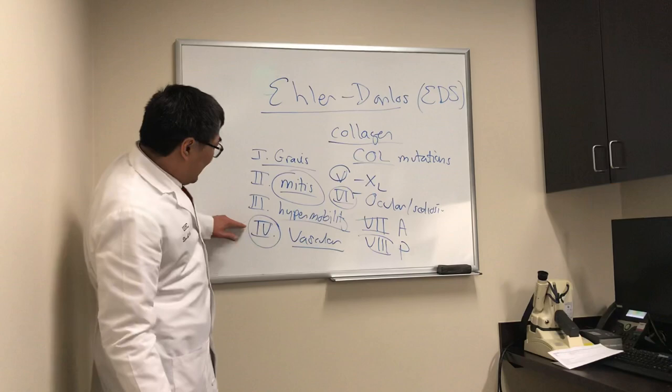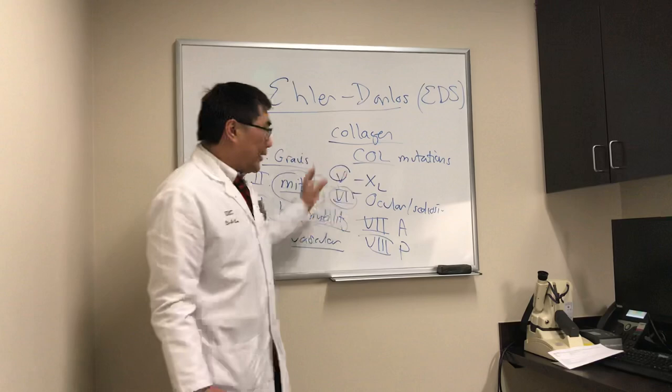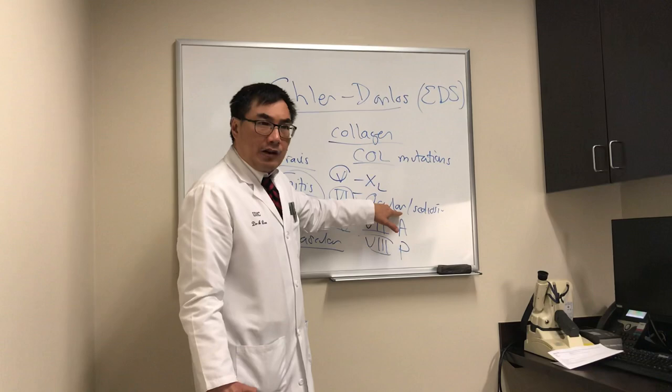In summary, you need to know about Ehlers-Danlos Syndrome — an inherited collagen disorder with different mutations. Think about it in patients who have thin blue sclera, keratoconus, myopic degeneration, angioid streaks, or strabismus. And beware of the vascular form of EDS.